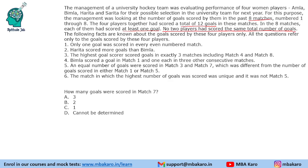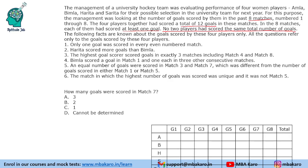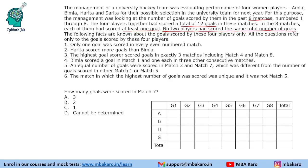We have 8 matches and 4 players, so we shall make a table. In each of the games — 1, 2, 3, 4 and so on — we need to find the total number of goals scored by each player. The grand total is 12 goals. Only 1 goal was scored in every even-numbered match, so all even-numbered matches will have 1 goal scored. Harita scored more goals than Bimla, so the total of Harita is greater than that of Bimla.